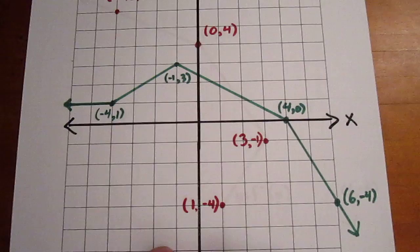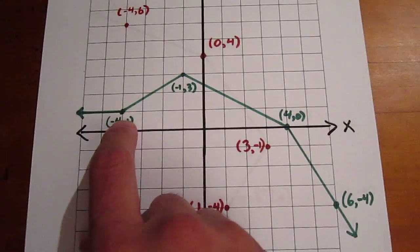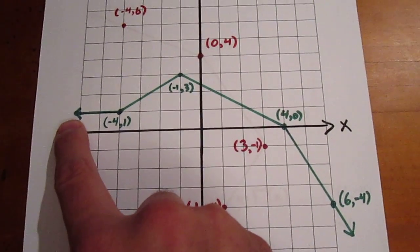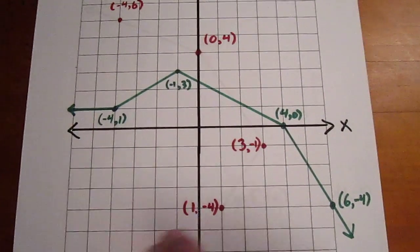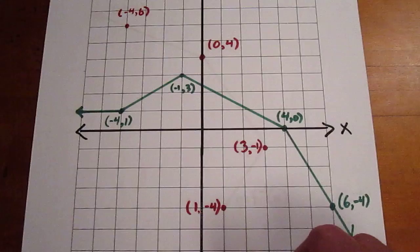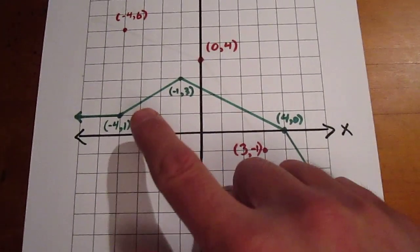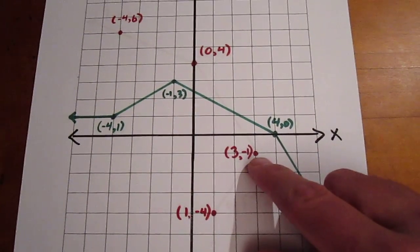Well, from negative 4, 1 over to ever-decreasing values of x, we head straight infinitely. So from 1, negative 4 to ever-decreasing values of y, we should head straight infinitely. We then connect from negative 4, 1 to negative 1, 3, so the images should do the same.